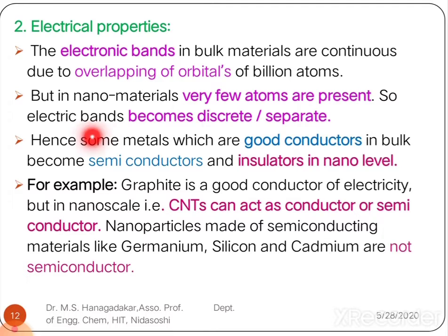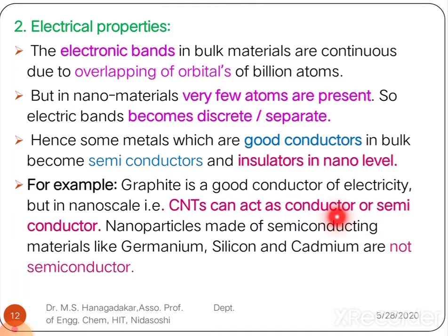Hence, some metals that are good conductors in bulk form become semiconductors and insulators when converted to nanoscale. For example, graphite is a good conductor of electricity but is not in nanoscale. Carbon nanotubes, an allotrope of graphite, can act as either a conductor or semiconductor.